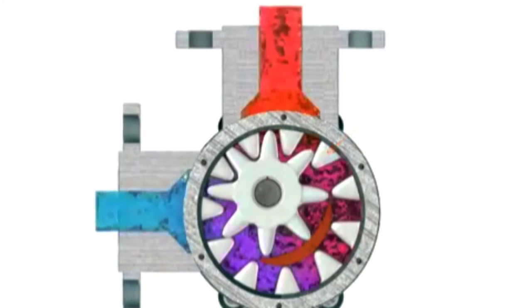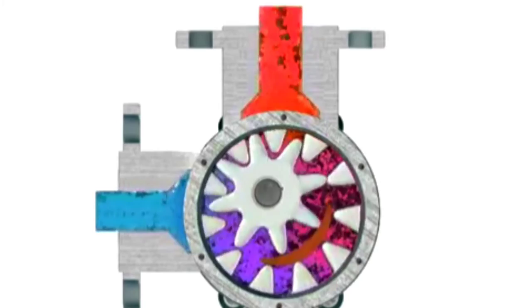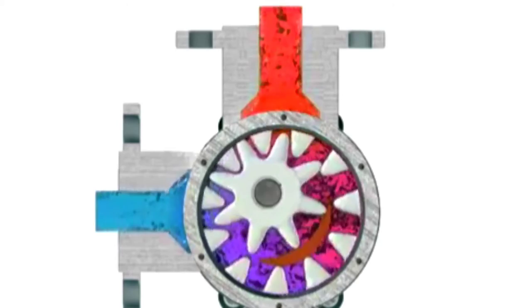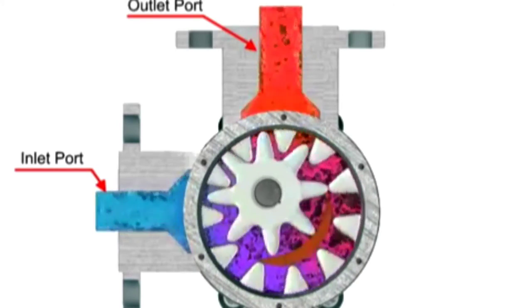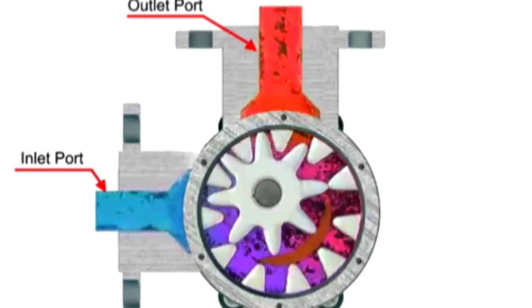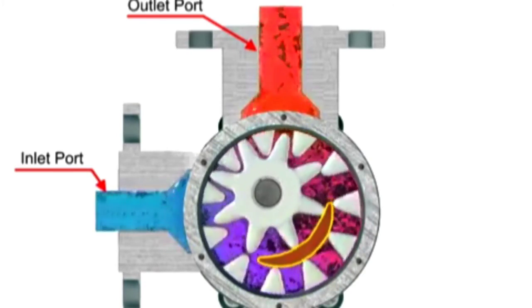As the inner gear rotates, it meshes with and moves the outer gear. Liquid is trapped in the gear spaces and carried from the inlet to the discharge. A stationary crescent shaped divider separates the intake and discharge portions of the fluid.